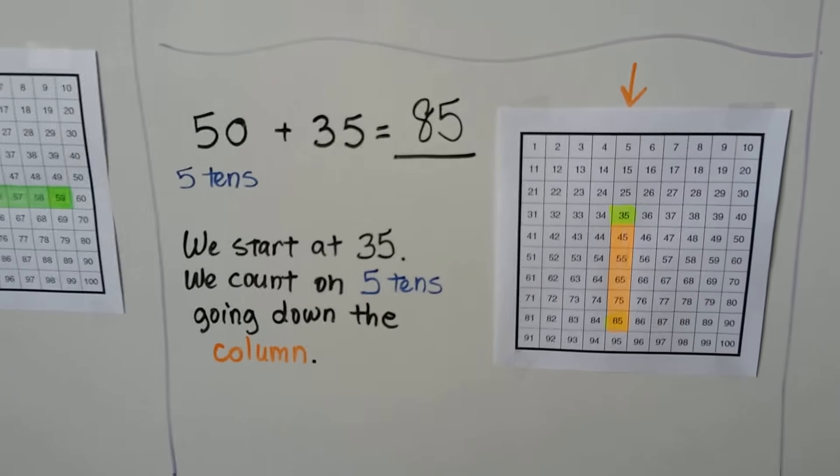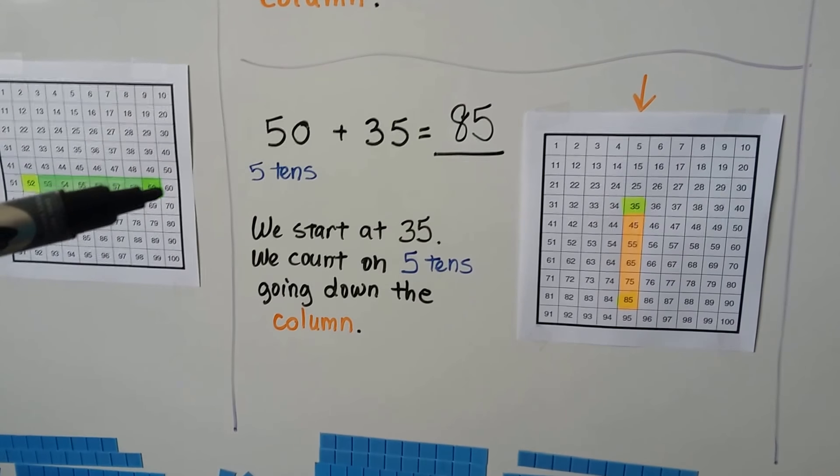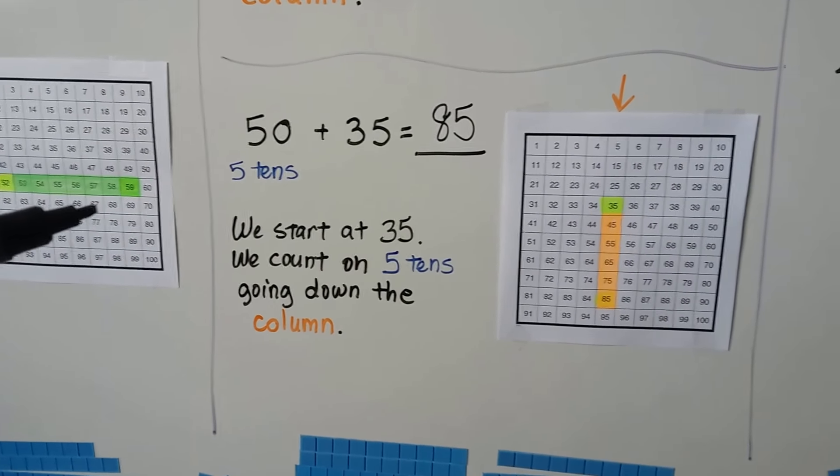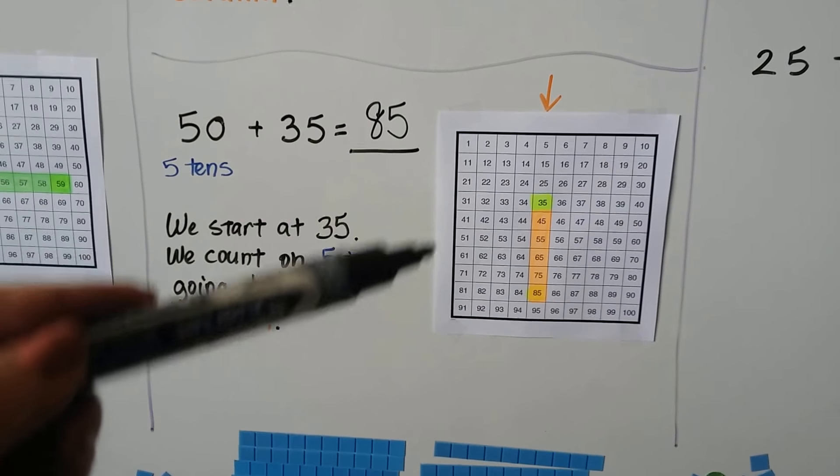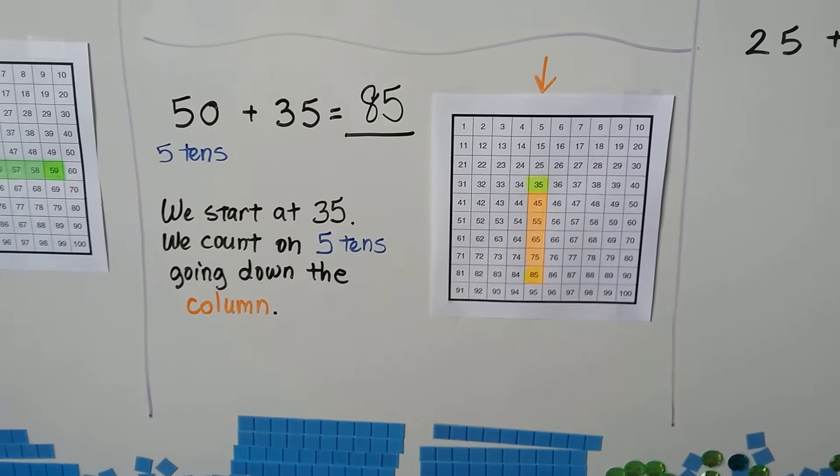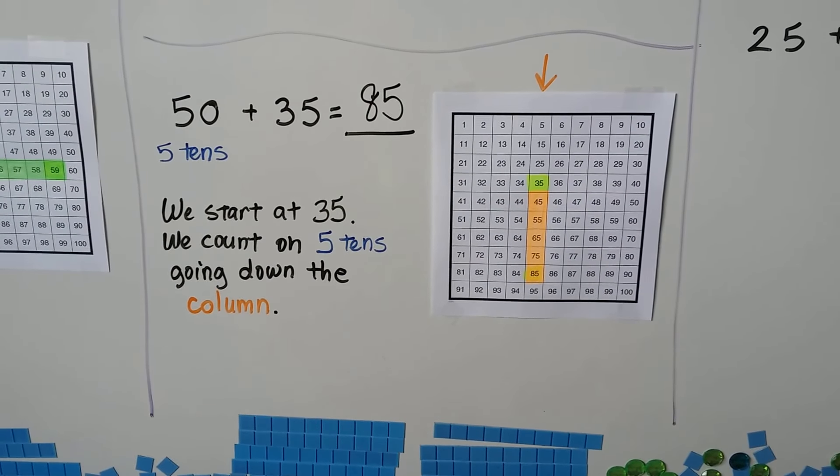When we count on ones, we go across the row, even if it makes us go to the next row. When we add tens, we go down the column and add groups of 10.